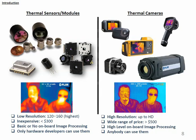Thermal cameras currently can be found in high resolutions up to HD. They have a wide range of price — $500 is just for the cheapest thermal camera, which can be used mostly by hobbyists, and there's no limit to how expensive they can be. They usually do high-level on-board image processing, and different software packages are available. Anybody who spends a little bit of time learning how to use them can use them.